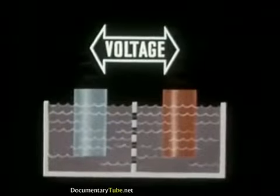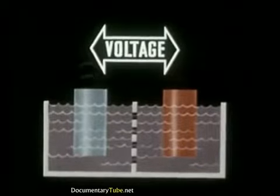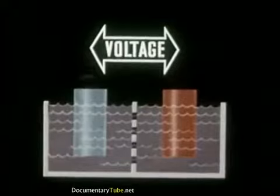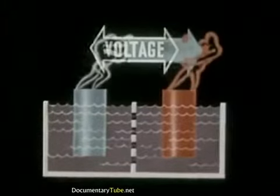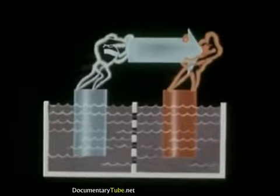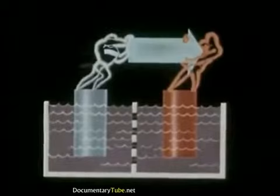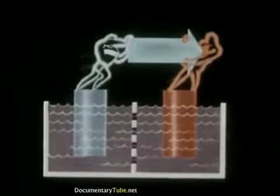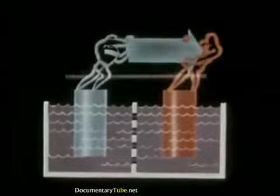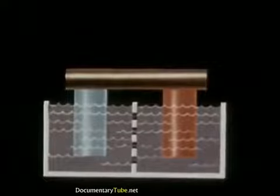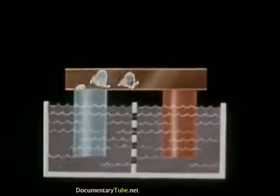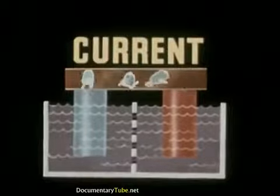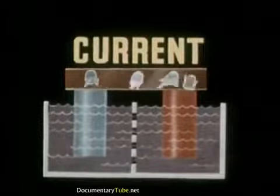The voltage then is always the potential difference at the negative and positive terminals of the source of electric energy. It represents the difference between the number of extra electrons at the two terminals. And when a suitable path is provided, the potential difference causes the electrons or current to flow from one terminal through the conductor to the other terminal.